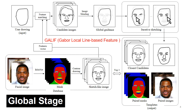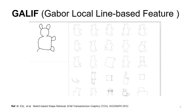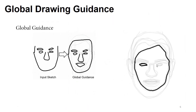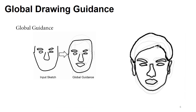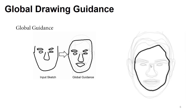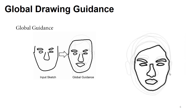On the global stage, the user's sketch is matched with the contour sketch extracted from our face mask database. A feature vector is generated with a handcrafted feature called the Global Local Line-based Feature (SCLIF). SCLIF is originally used for sketch-based 3D model retrieval and has been proven effective and efficient for contour-like sketches. In our system, SCLIF is used to find similar contour sketches matching the user's rough sketch. The contour sketches with the top three similarities in our database are selected in real-time as global guidance to assist users in completing their rough sketch.